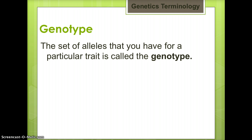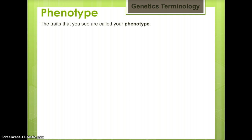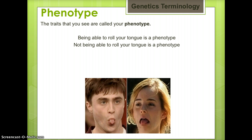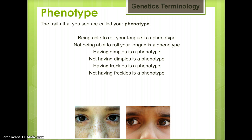The set of alleles that you have for a particular trait is called the genotype. For example, capital T capital T is a genotype, capital T lowercase t is a genotype, and lowercase t lowercase t is a genotype. The traits that you see are called your phenotype. For example, being able to roll your tongue is a phenotype, not being able to roll your tongue is a phenotype, having dimples is a phenotype, not having dimples is a phenotype, having freckles is a phenotype, and not having freckles is a phenotype.